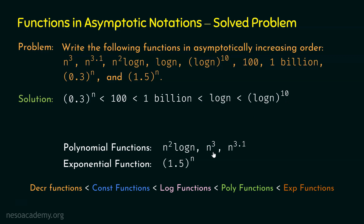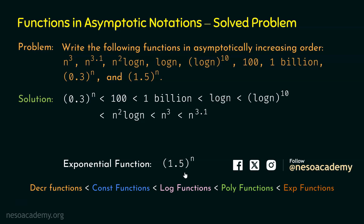For the polynomial functions: n^3.1 is greater than n³ because 3.1 = 3 + 0.1. For n² log n versus n³: n³ = n² × n and n² log n = n² × log n, and since log n < n, we get n² log n < n³. So the order is n² log n < n³ < n^3.1. Finally, 1.5^n as the exponential function comes last. This is the final result with all functions arranged in asymptotically increasing order.